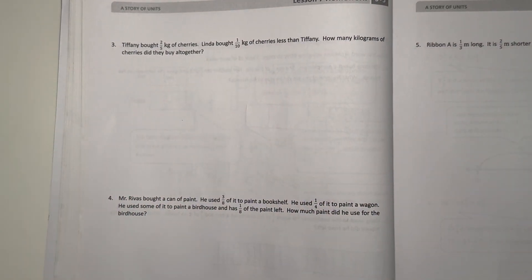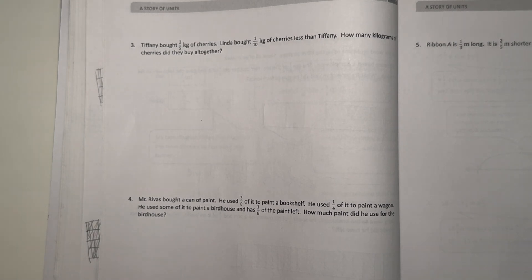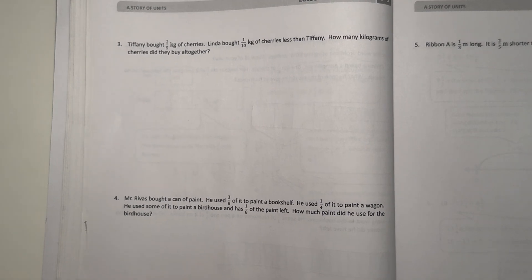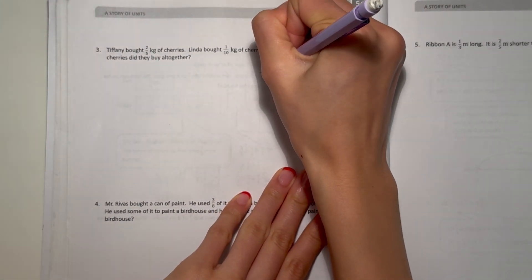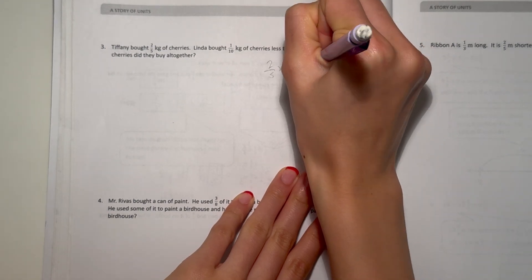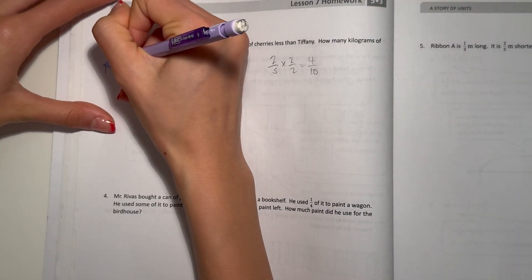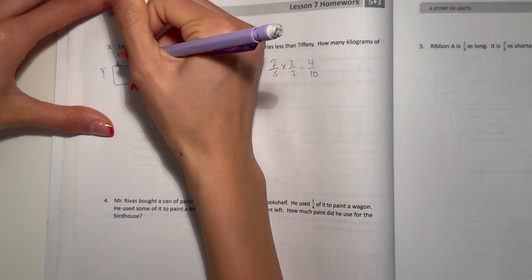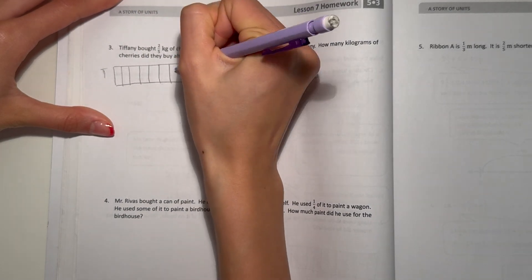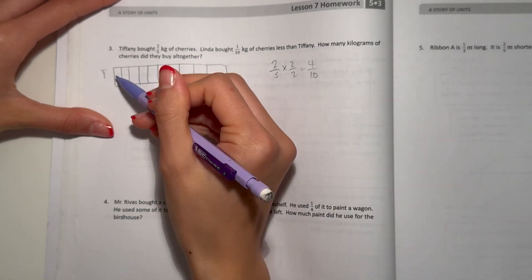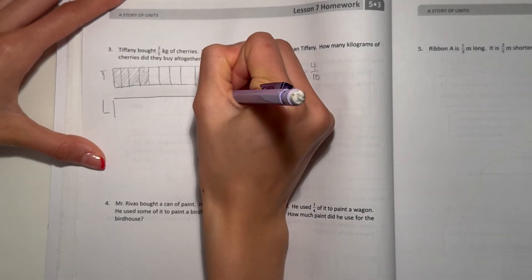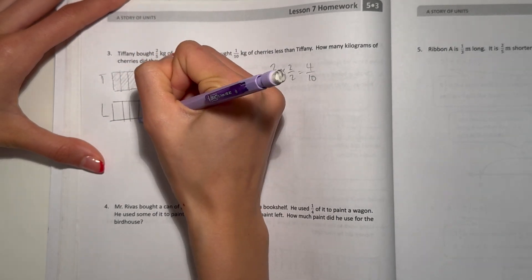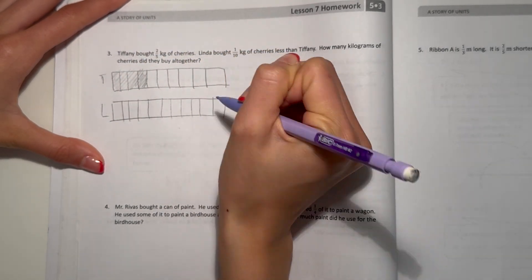Three. Tiffany bought two-fifths kilograms of cherries. Linda bought one-tenth kilogram of cherries less than Tiffany. How many kilograms of cherries did they buy altogether? So first, two-fifths, we can turn our fifths into tenths. Times two equals four-tenths. So first, T for Tiffany. Now, we're gonna separate this into tenths. Four-tenths. That's how much she picked. Now, L for Linda.